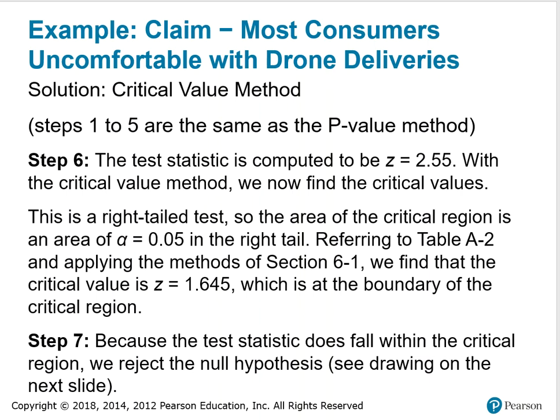Continuing the example where most consumers are uncomfortable with drone delivery, we started with the p-value method and now we move on to the critical value method. Steps 1 through 5 are the same as the p-value method: write the claim and its opposite in symbol form, the null and alternative hypotheses, then determine your significance level. Step 6 is to calculate the test statistic, found to be z equals 2.55. With the critical value method, we now find the critical values.